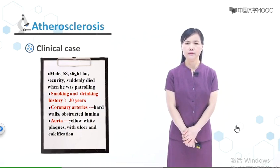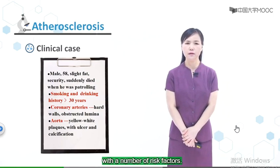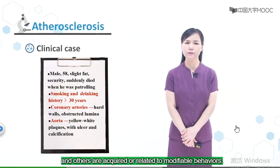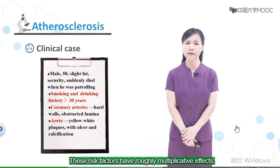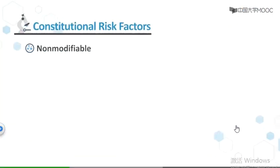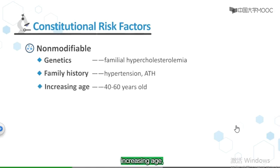The prevalence and severity of ATH have been correlated with a number of risk factors. Among them, some are constitutional and others are acquired or related to multiple behaviors. These risk factors have roughly multiplicative effects. Constitutional factors include genetics, family history, increasing age, and male gender.